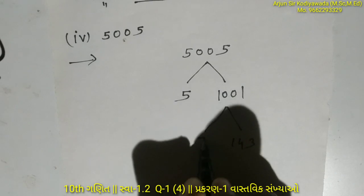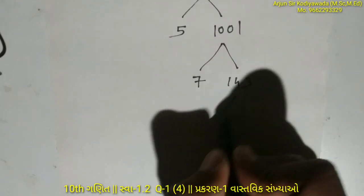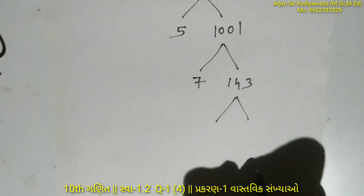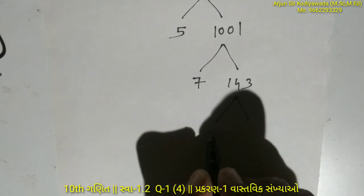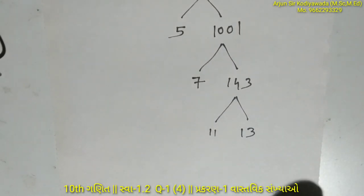Taking 1001, we divide by 7 to get 143. Now we divide 143 by 11, which gives us 13.